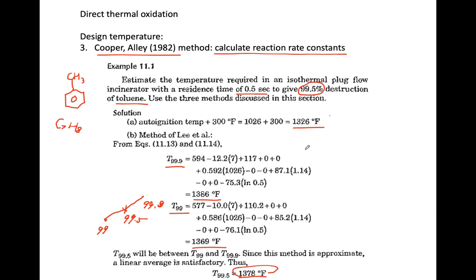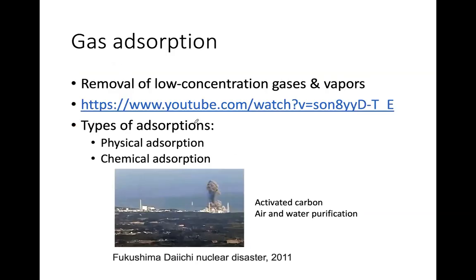These two temperatures are not very far apart, but for accuracy, the Lee-Hansen method is still recommended for calculating the thermal oxidation temperature. One important note: direct thermal oxidation does not involve a catalyst. If we use a catalyst in the VOC incinerator, the required temperature would be lower because the catalyst lowers the activation energy. This concludes the VOC incineration topic. Now we move on to the third VOC control method: gas adsorption.